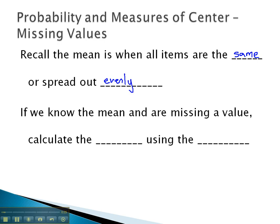So we'll use this concept, and if we know the mean and are missing one of the values, what we can do is calculate the sum or total using the assumption that they are all spread out evenly with the mean. Let's take a look at an example where we calculate the sum using the mean.